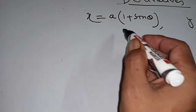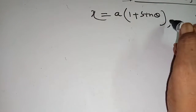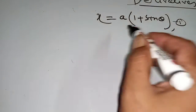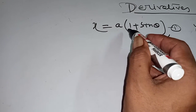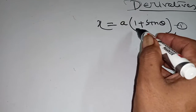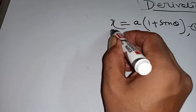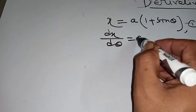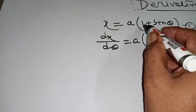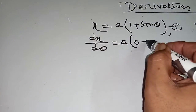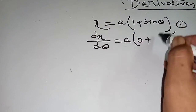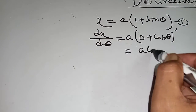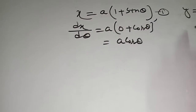At first, from here, we have two equations given — equation one and equation two. From here, do derivative on both sides with respect to theta. It will be dx d theta equal to a into dx of 1 is 0 plus dx of sin theta is cos theta, then it will be a cos theta.